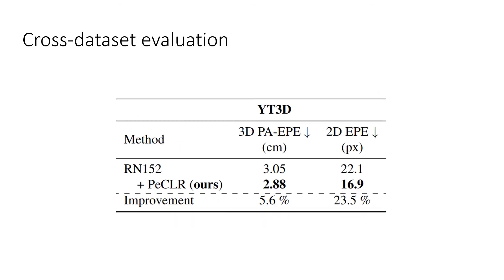Lastly, we look at if this increase in performance also carries across datasets. We take the best-performing model of the previous experiment and run it on YouTube 3D Hands. We observe that PECLR leads to improved performance, most notably in 2D pixel error. This indicates that the improvement brought by PECLR generalizes across datasets.